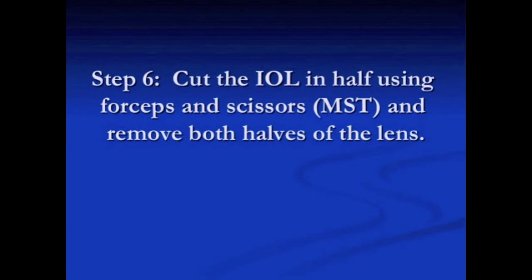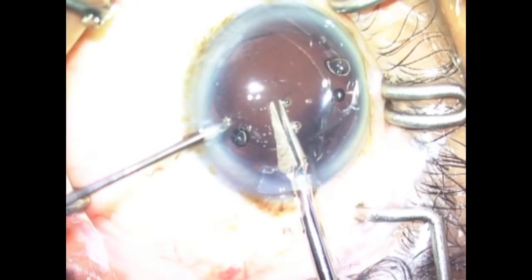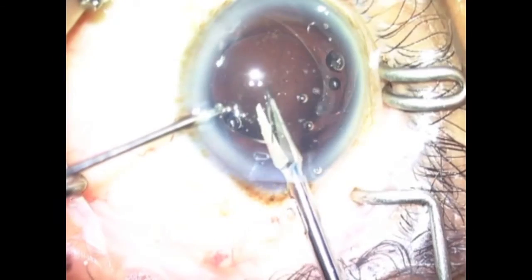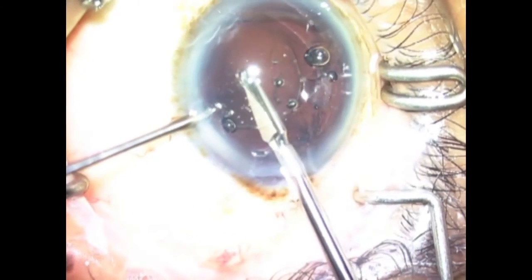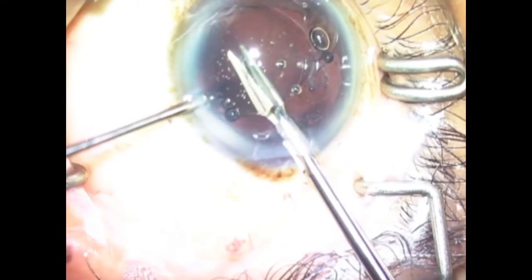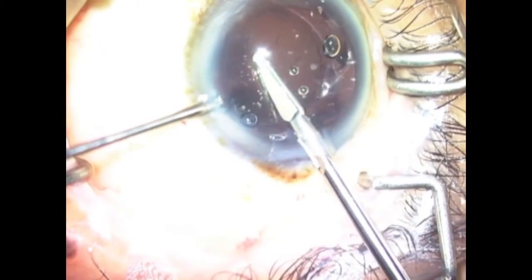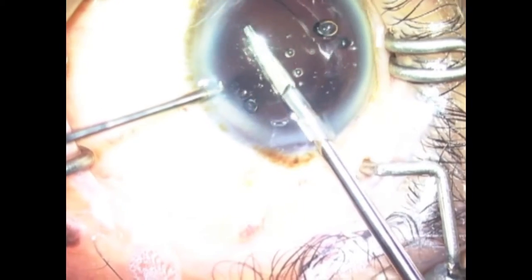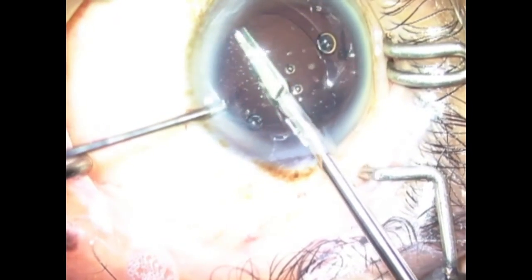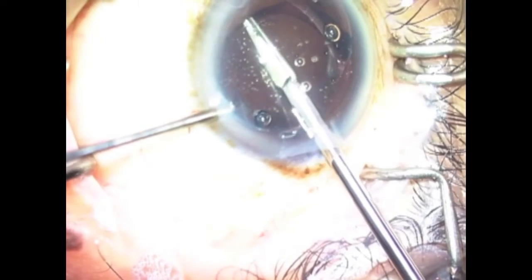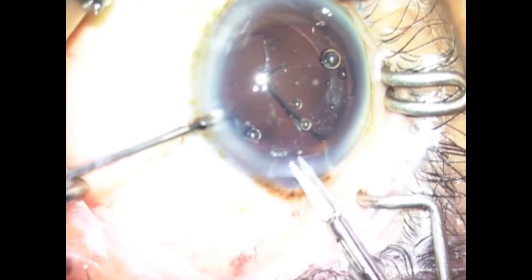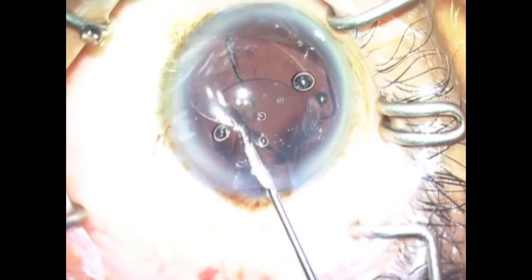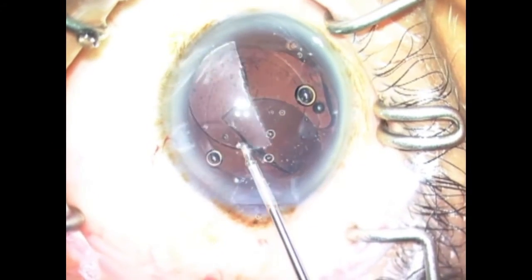Cut the intraocular lens in half using MST forceps and scissors. Several small bites are taken with the scissors to complete cutting the intraocular lens in half. Both halves of the intraocular lens are then removed with forceps.